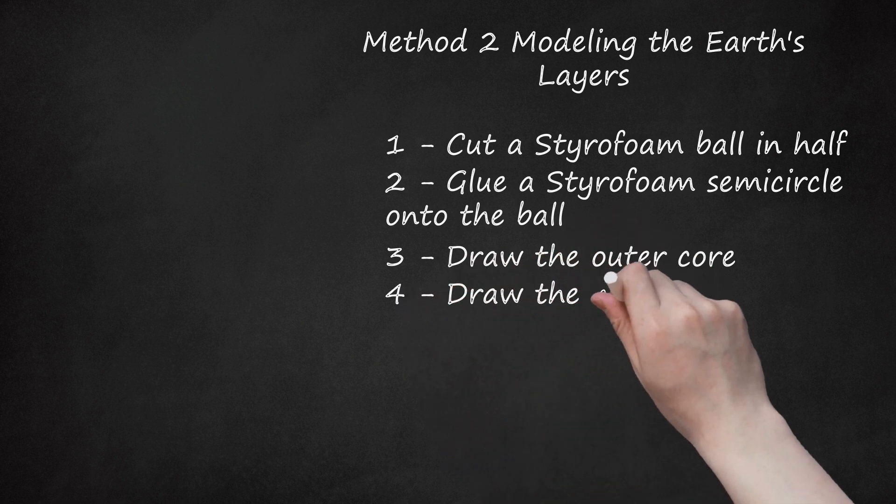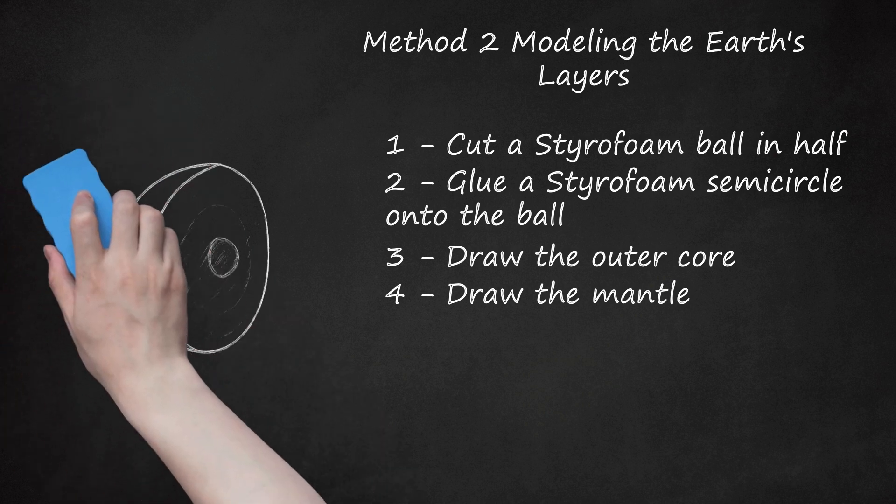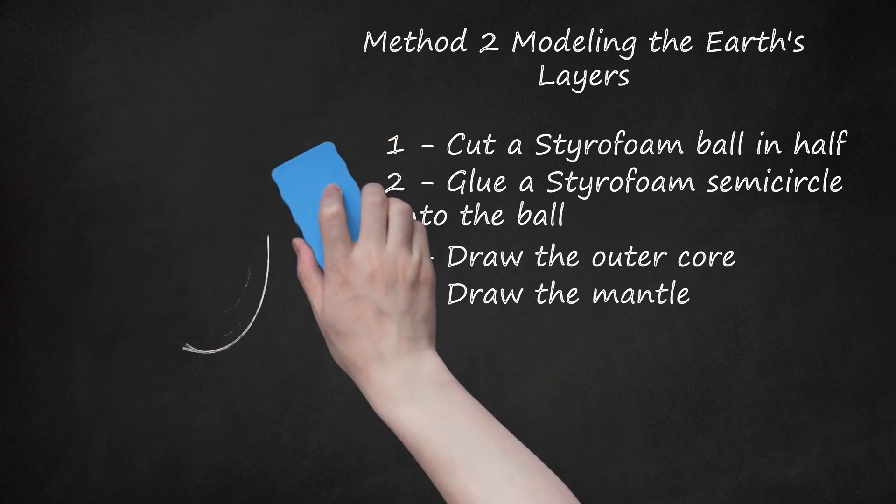Step 4: Draw the Mantle. Color the rest of the flat surface yellow, leaving only a tiny sliver of uncolored land at the edge. Label this the mantle. The mantle is actually made up of the upper mantle, solid rock, and the lower mantle, liquid rock. Divide it into two different shades of orange if you like.